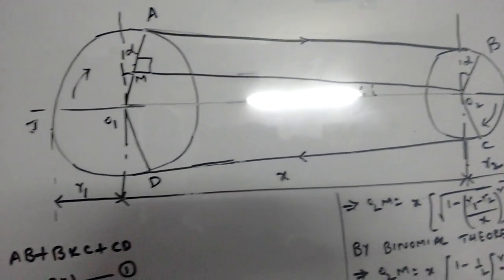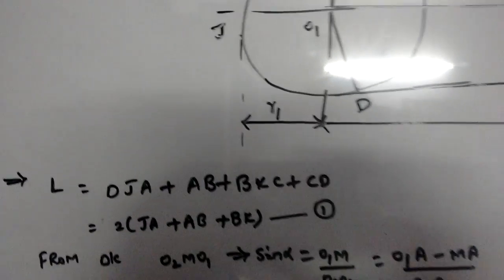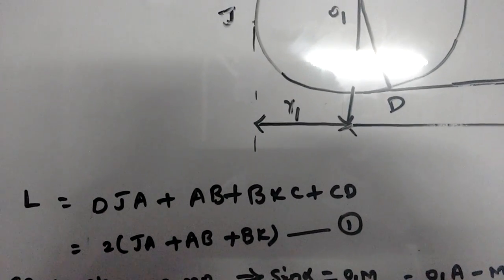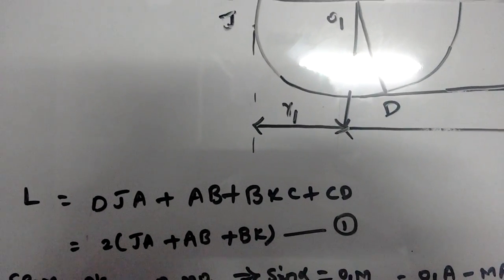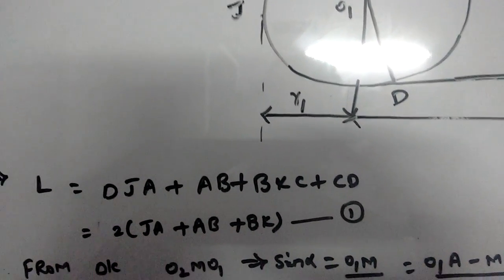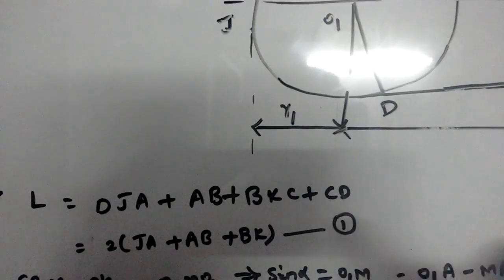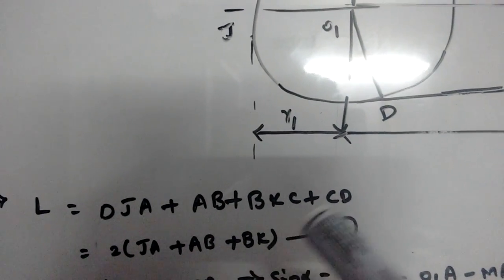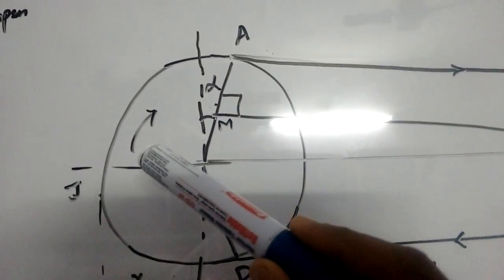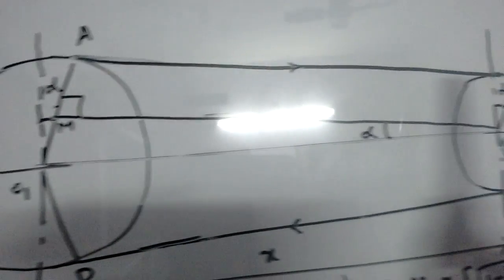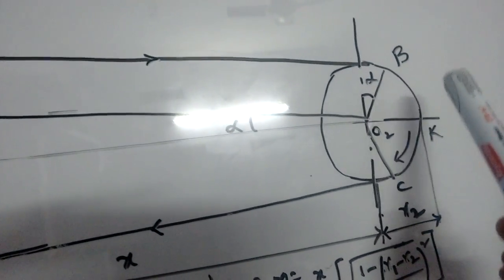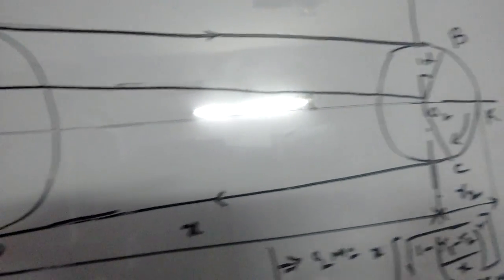So we can write L equals DJA plus AB plus BKC, which by symmetry equals 2 times (JA + AB + BK).